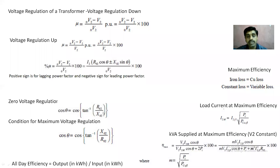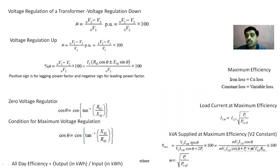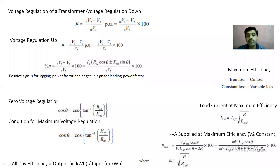We have derived the zero voltage regulation cosθ formula and the maximum voltage regulation formula. Coming to efficiency, maximum efficiency occurs when iron loss equals copper loss. Load current at maximum efficiency I2M = I_full_load × √(iron loss / copper loss). KVA at maximum efficiency = V2·I2M·cosθ / (output + 2 × iron loss). For all-day efficiency, the formula is: output in kWh / input in kWh. These are the key formulas for single-phase transformers.